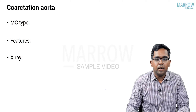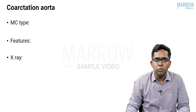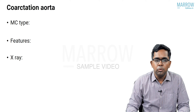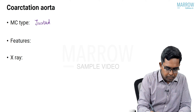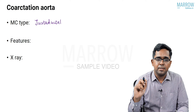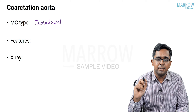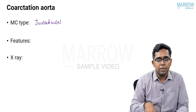The next acyanotic heart defect is coarctation of the aorta, which refers to narrowing of the aorta. The most common site of coarctation is juxtaductal, meaning near the area of the ductus arteriosus, usually at the junction of the arch of the aorta and the descending aorta. Due to the narrowing, there is decreased blood flow to the lower limbs, resulting in claudication pain.